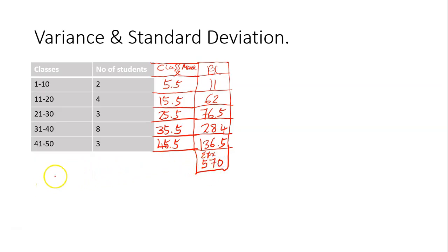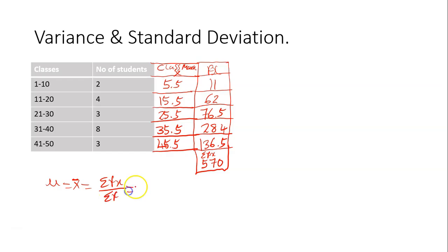The mean — if it is a population mean you write mu; if it is a sample mean you write x-bar — is the sum of fx divided by the sum of f. Sum of fx is 570 and sum of f is 20, so 570 divided by 20 gives us 28.5. Whether it is population mean or sample mean you get the same answer, but standard deviation and variance won't be like that.